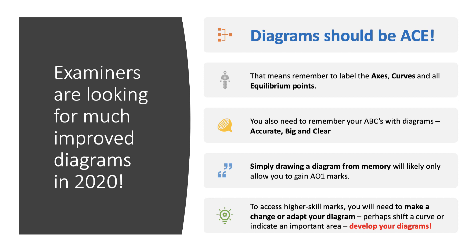Diagrams should be ACE. Always remember to label the axes, the curves, and all of the equilibrium points. Draw to the axes. You also need to remember to be A, B, C with your diagrams: be accurate, be big, and be clear. Crucial point: simply drawing a diagram from memory - just dumping a diagram onto the page - will only probably get you the lowest level of marks, AO1. To access the highest skill marks for analysis and to help the evaluation, you'll definitely need to make a change or adapt your diagram.